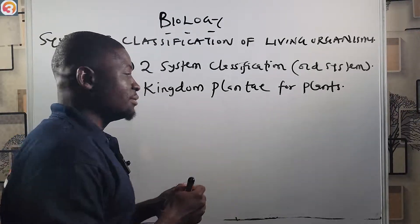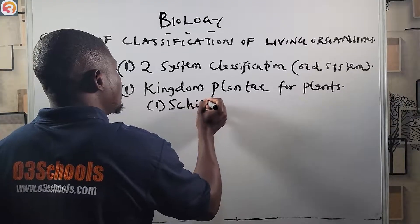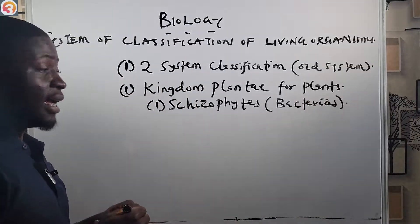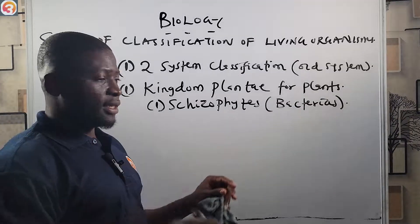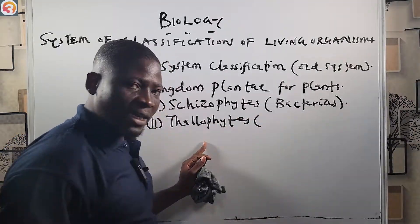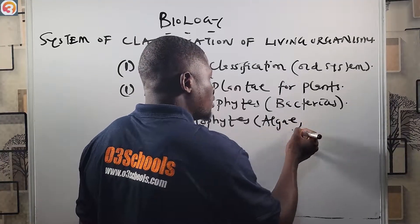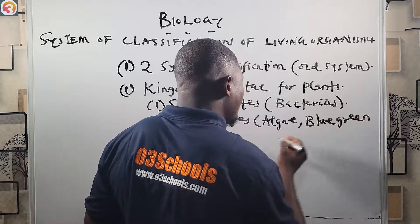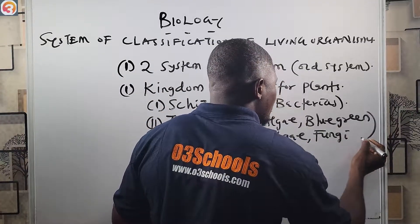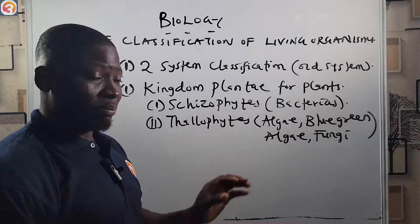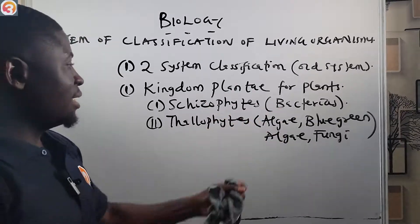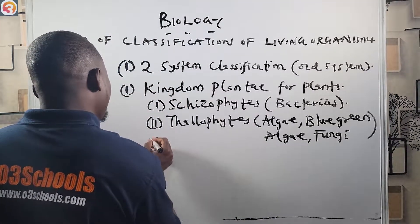Under Kingdom Plantae, living organisms are classified into the following groups: first, Schizophyta, which includes the bacteria; then Thallophyta, and under Thallophyta we have algae, blue-green algae, and also fungi.